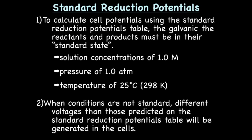When conditions are not standard — so the concentrations are not 1 molar, the pressure is not 1 atm, and/or the temperature is not 25 degrees Celsius — you're going to get different voltages from those predicted on the standard reduction potentials table.